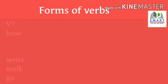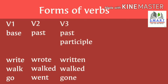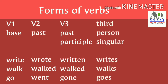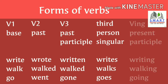There are mainly three forms of verbs: V1, V2, and V3. V1 is the base form or present form, used in simple present tense — for example, 'I write a letter.' V2 is the past form, used in simple past tense — for example, 'you wrote a letter.' V3 is the past participle form. The Ving or present participle form is used in continuous tense — for example, 'she is writing a letter.'